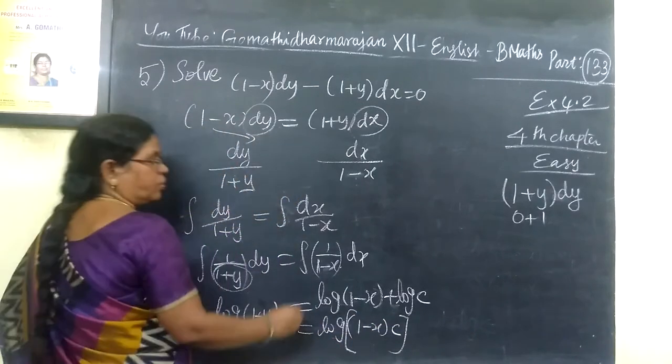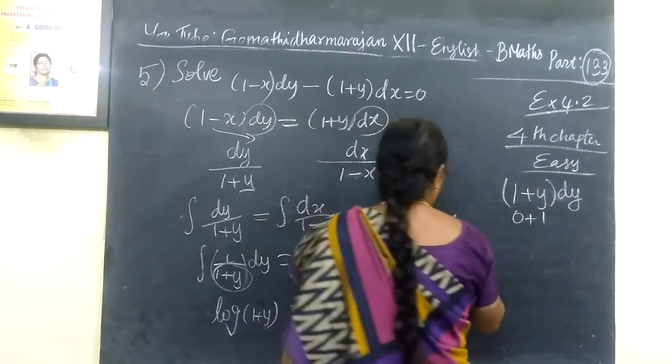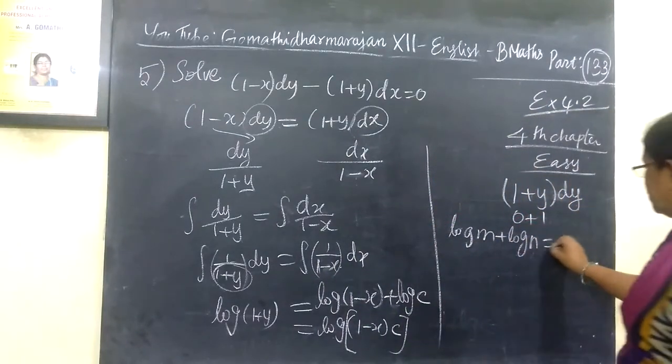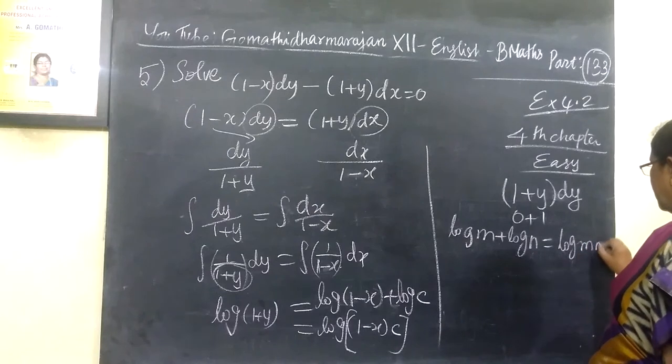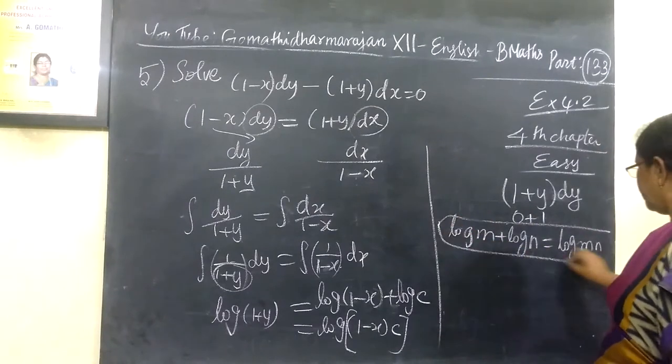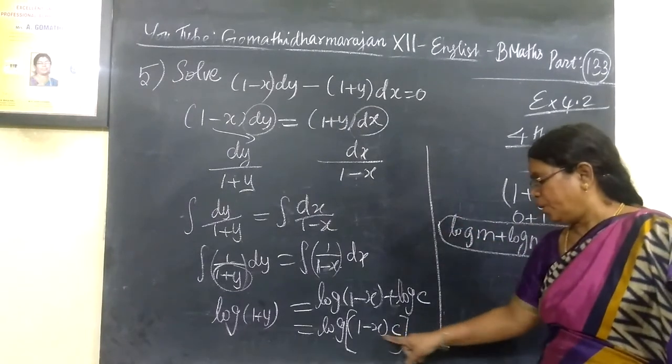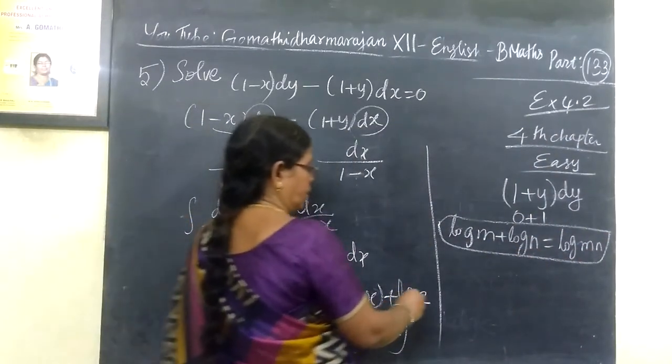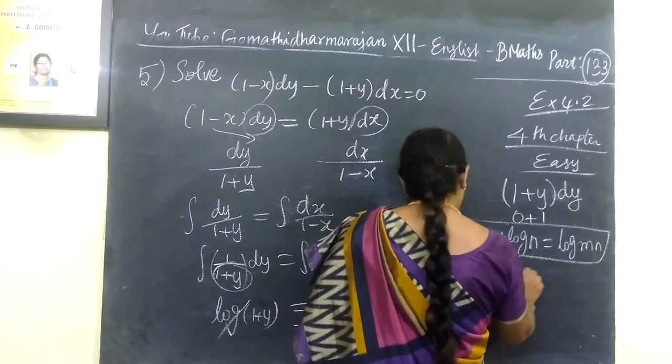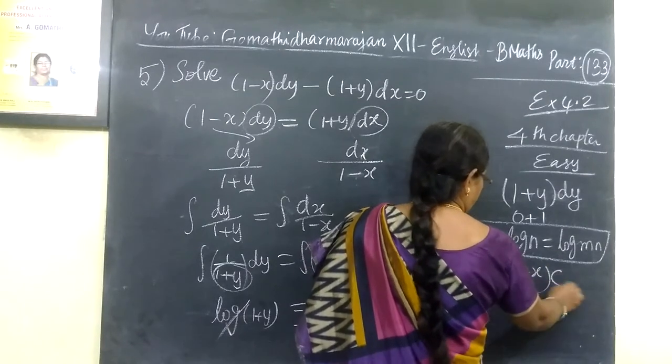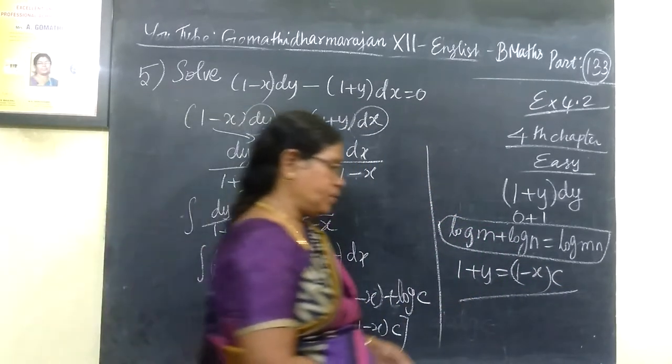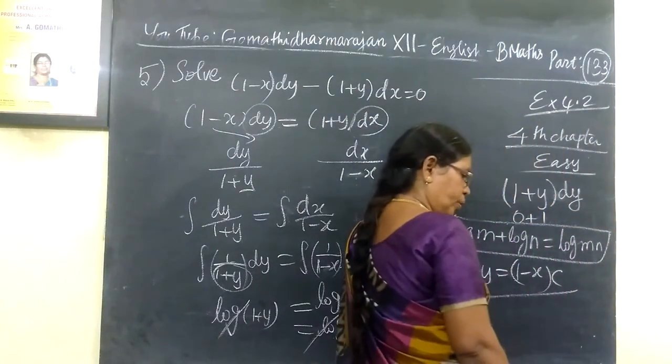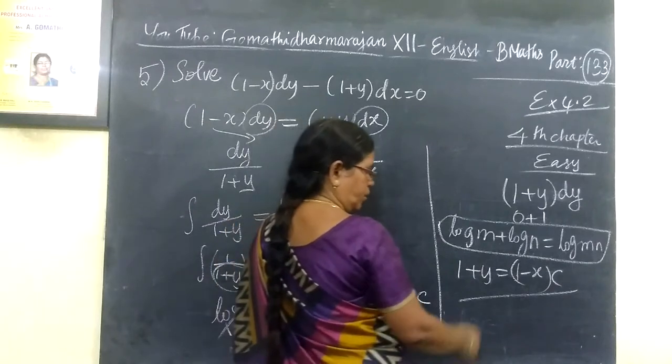So log m plus log n, because we know log m minus log n is equal to log(m/n). This is what is here, which is log m minus log n. So log can cancel, then we get 1+y equal to (1-x)c. This is the answer we will get.